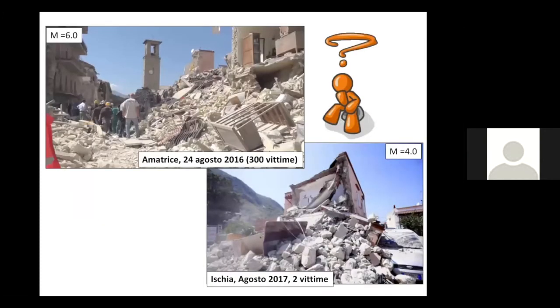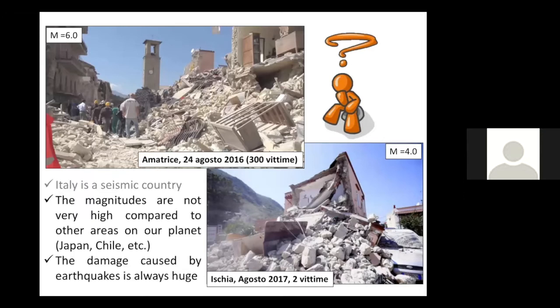If we come back to these images that we saw at the beginning, also in light of what we have seen so far, we can say that, yes, for sure, Italy is a seismic country and it is located along the plate margin. But if we remember the video and the images, compared to other areas of the planet like Japan or South America or Southeast Asia, the earthquakes are not so big. The magnitudes are not so high. But despite the modest energies involved, every time an earthquake occurs in Italy, we have seen that the damage produced is very, very huge.